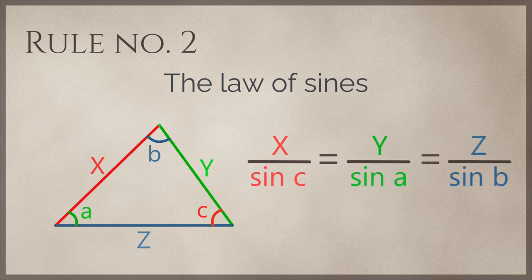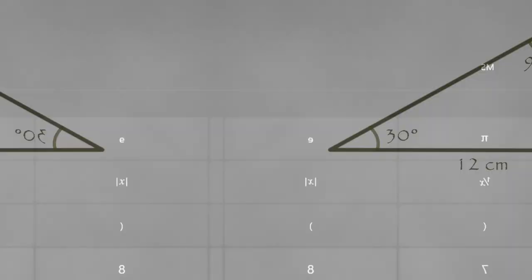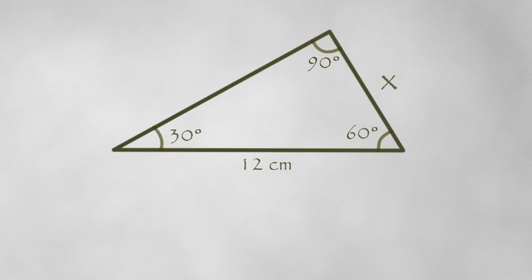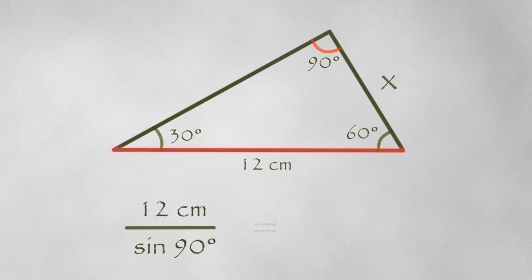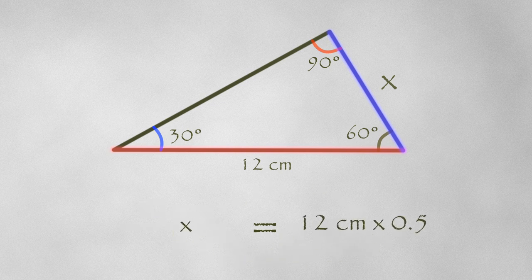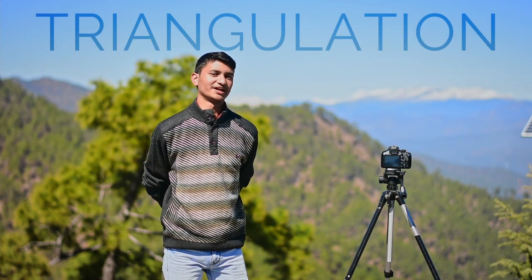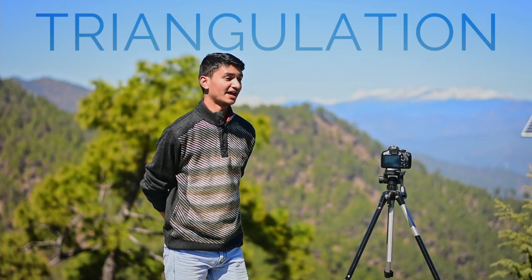Triangles follow yet another law called the law of sines, which states that the length of any side divided by the sine of the angle opposite to it is equal to the same for the other two sides and their opposite angles. If you don't know what sine is, it's a button on your calculator. So using this law, this side divided by sine of 90 degrees must equal this side divided by sine of 30 degrees. Using the actual values and solving this equation, our side turns out to be 6 centimeters. What we just did on paper is known as triangulation.